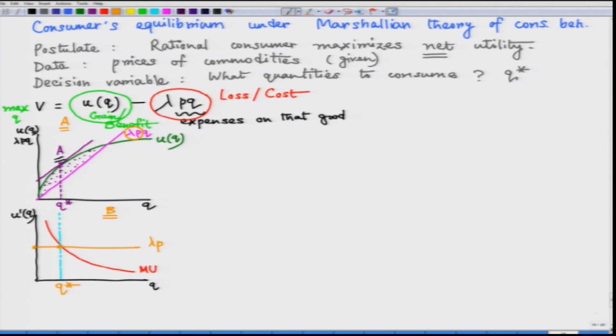Because we have already seen that at the consumer equilibrium Q star as we observed in panel A, at that point the slope of the total utility function which is the marginal utility function equals the slope of the cost line which is lambda P. So this is an alternative representation.